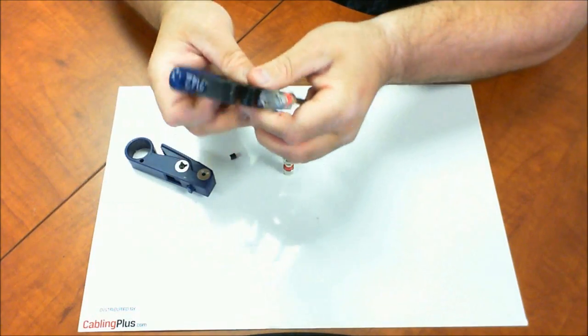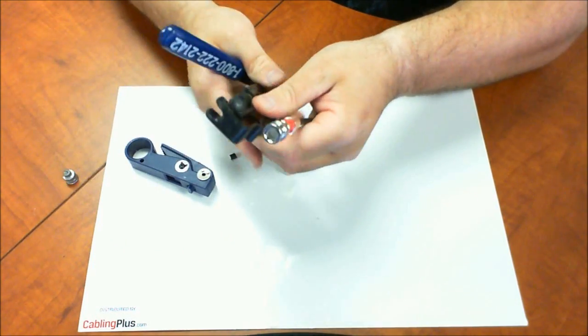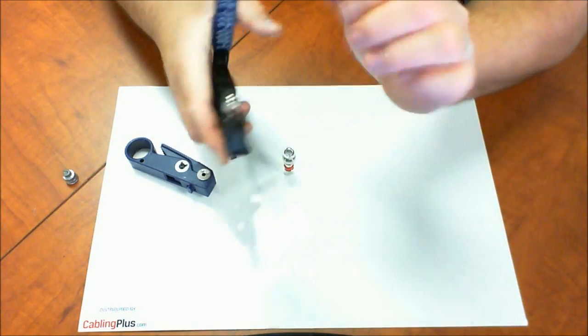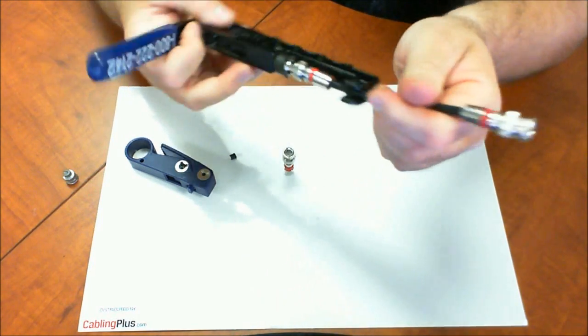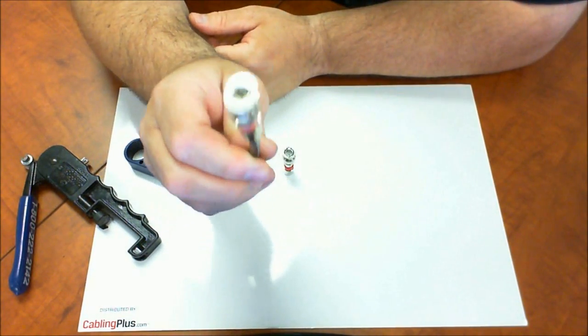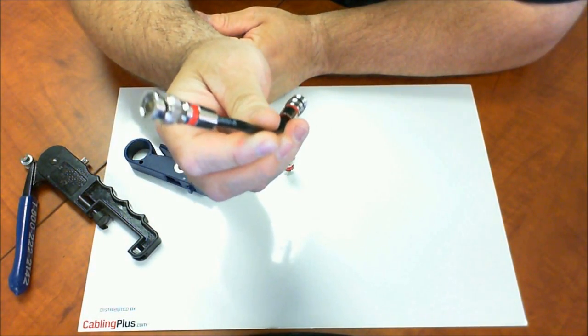So, now I'm going to just use my SLM tool and put that in there. I'm just going to give it a crimp there. Now, you have a perfectly terminated piece of RG59 coaxial cable.